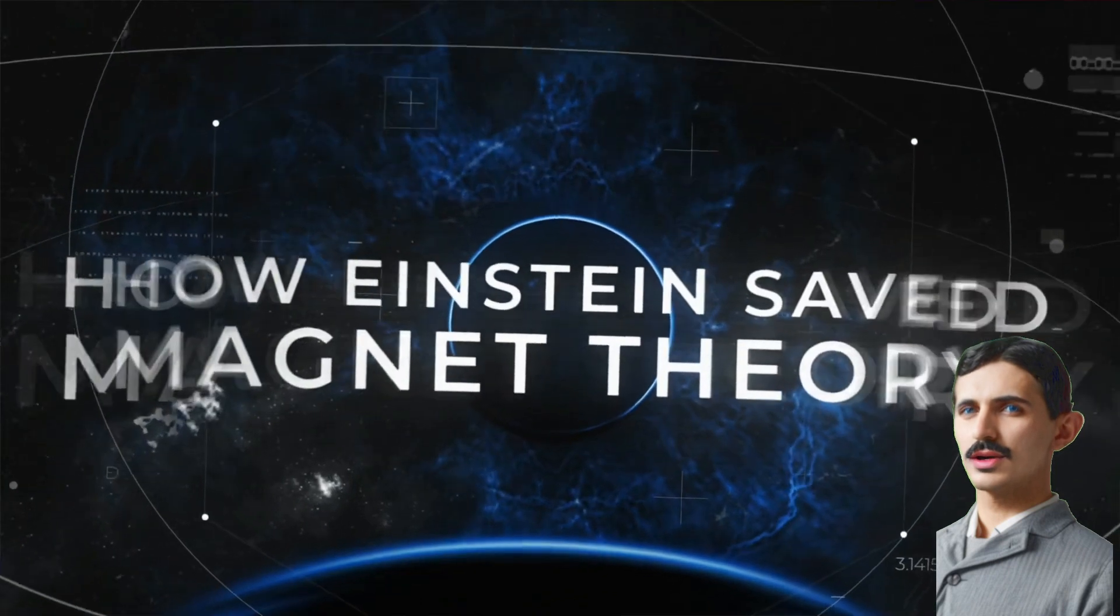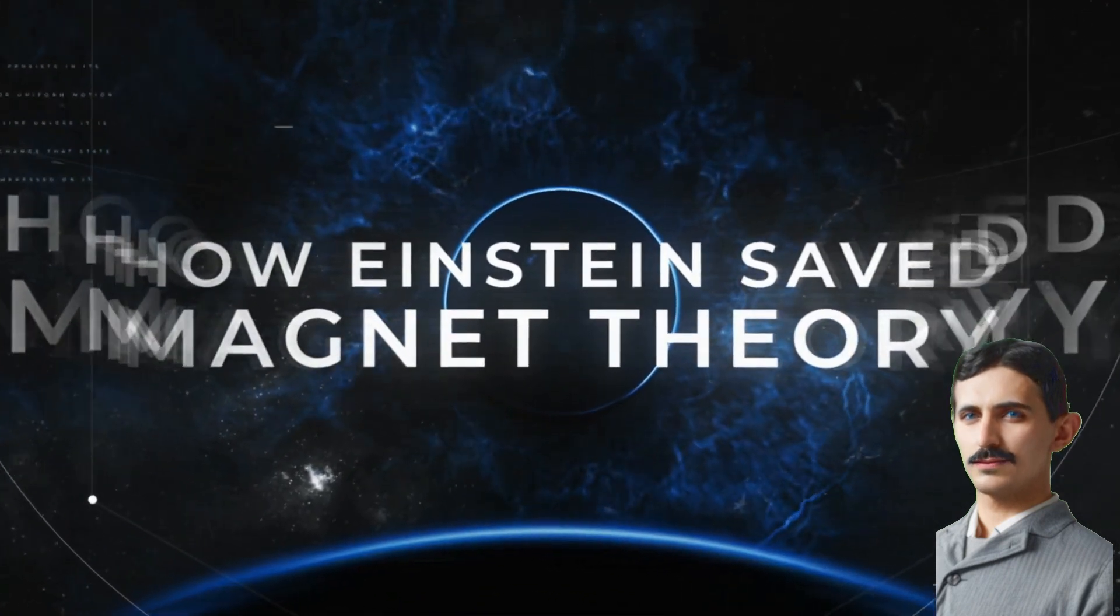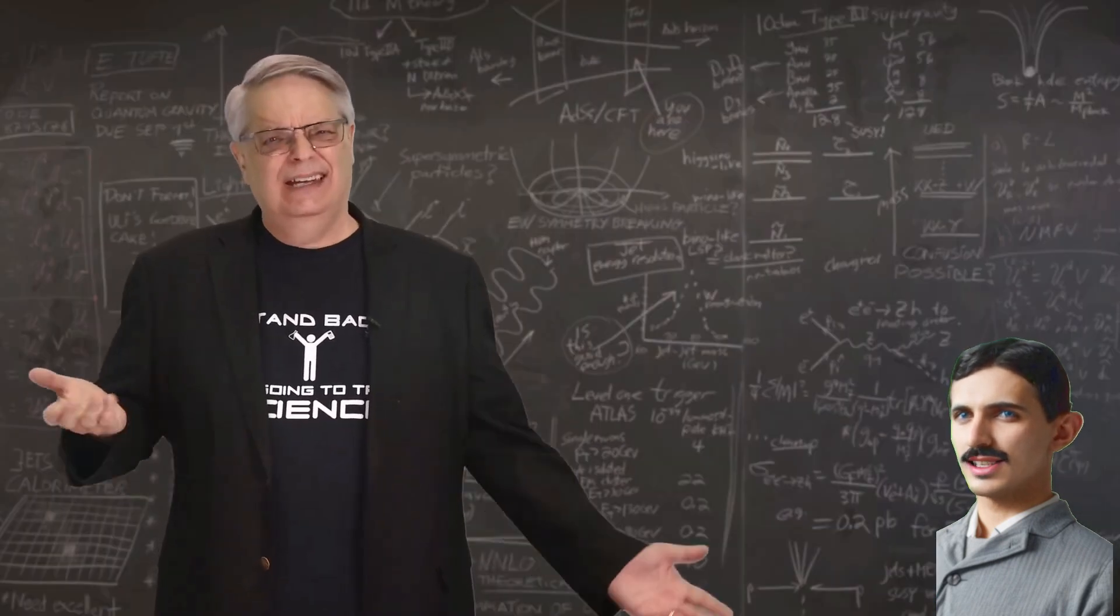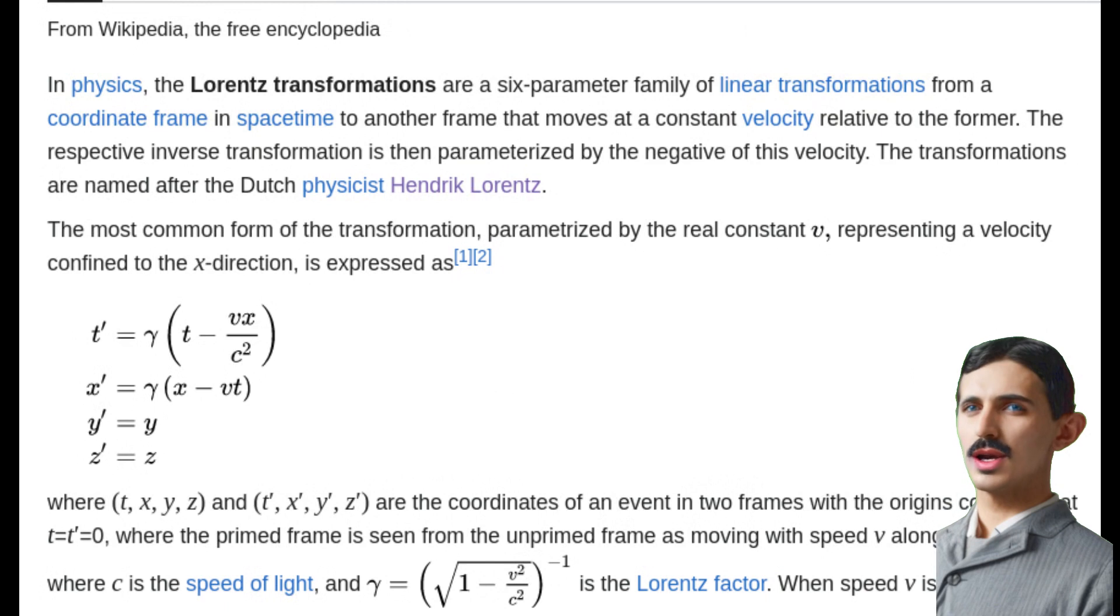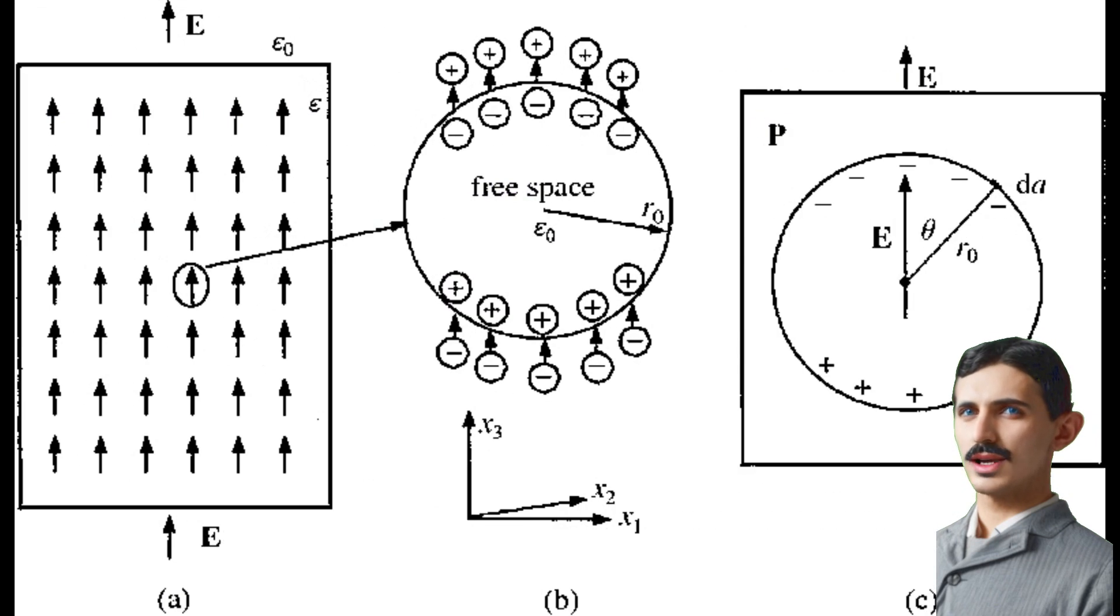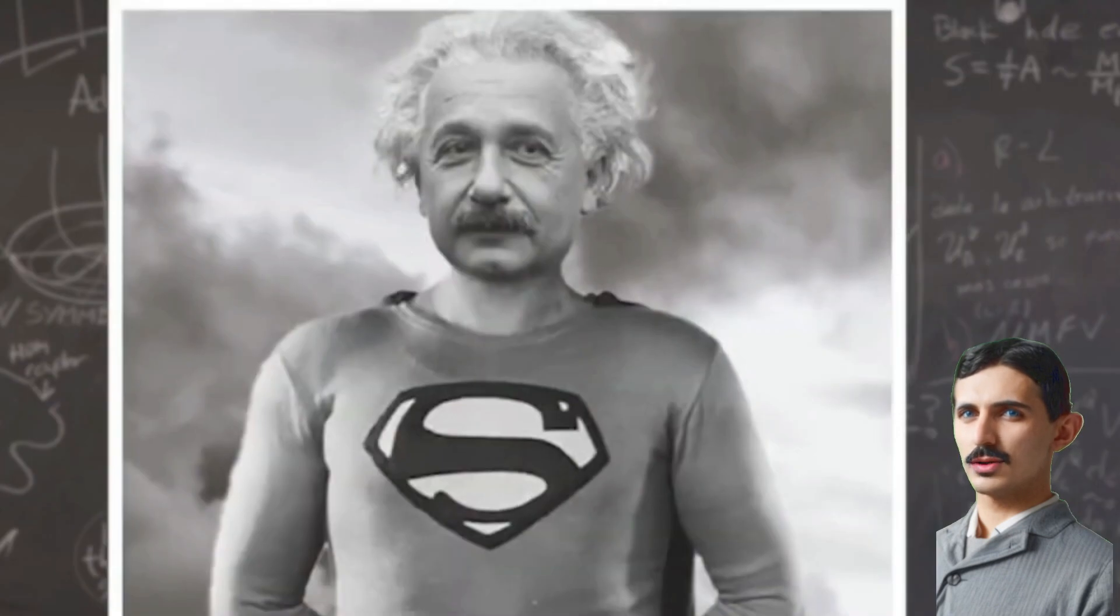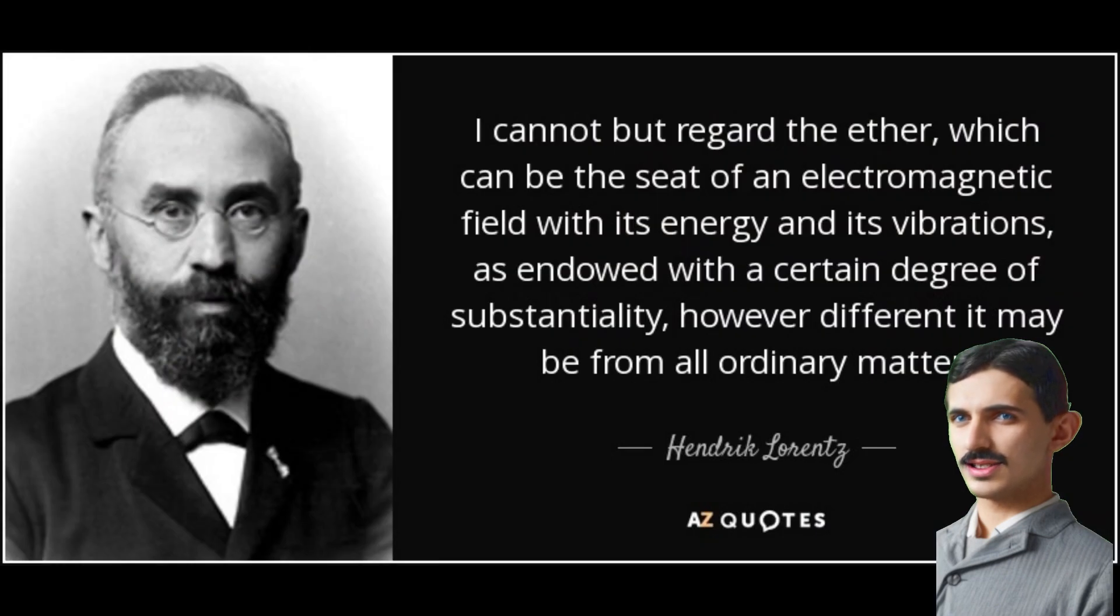There are two more small issues that I have with this video. First, it is presented as if relativity or Einstein saved the day. In reality, it is Lorentz with his Lorentz transformations. These were originally based on Lorentz theory of the ether. But today, these are attributed to Einstein and seen as evidence for his theory, or worse, to disprove the existence of the ether.